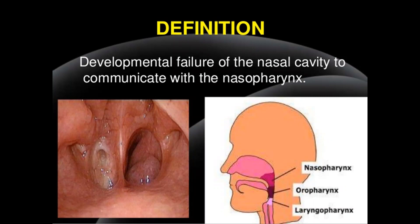So what does choanal atresia mean? The choana refers to an opening at the back of the nasal passage that empties into the nasopharynx, and atresia refers to abnormal narrowing or absence of an opening. So in choanal atresia, there is an abnormal narrowing of the choana that is usually present at the back of the nasal passage.